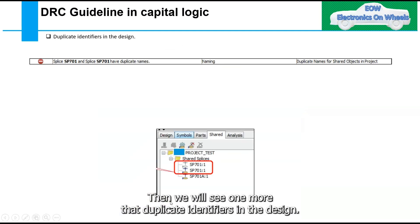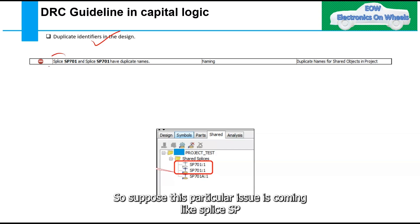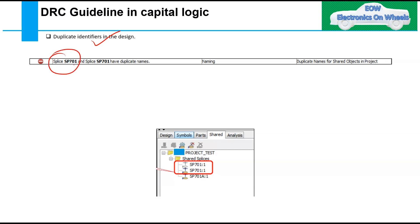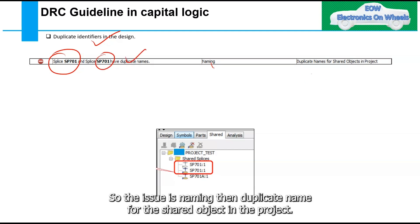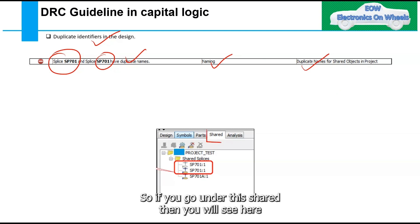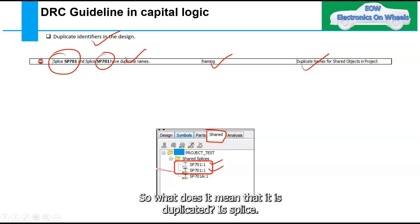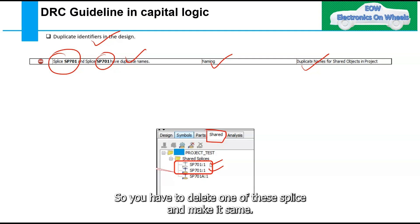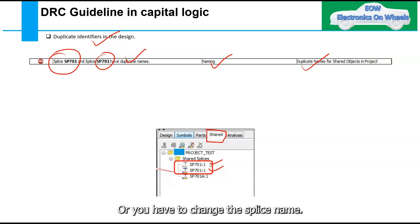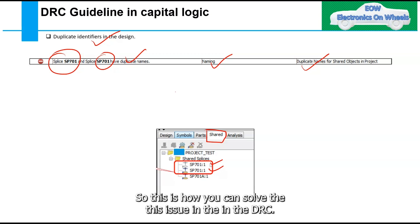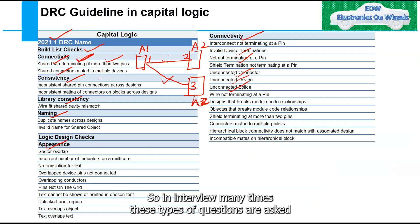Another DRC example is duplicate identifiers in the design. For instance, splice SP701 appears twice with the same name — the issue is flagged under naming as 'duplicate name for shared object in the project.' Under the shared view, you can see SP701 listed twice. To fix it, either delete one splice or rename it to remove the duplication.